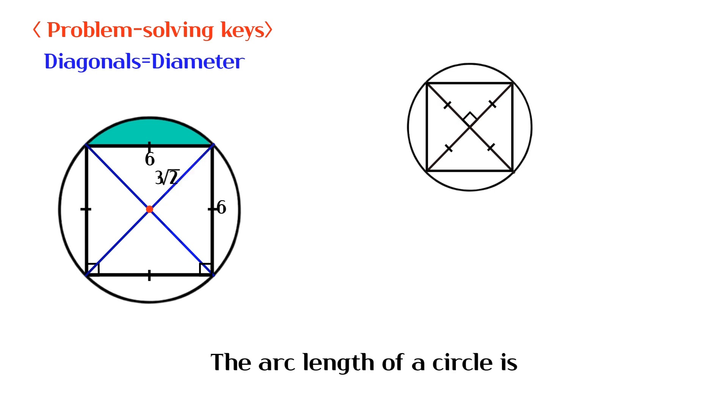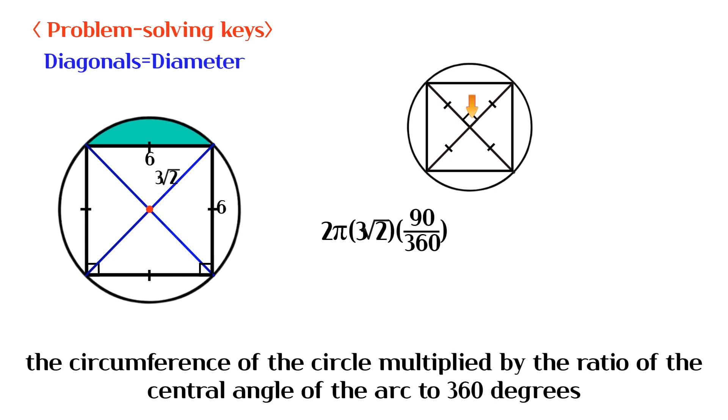The arc length of a circle is the circumference of the circle multiplied by the ratio of the central angle of the arc to 360 degrees.